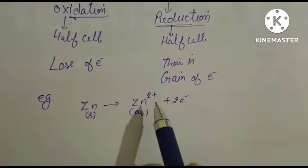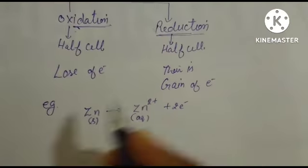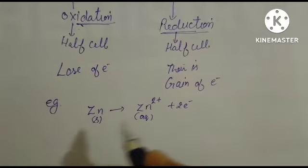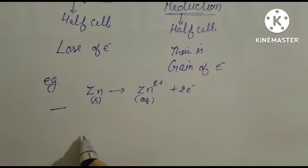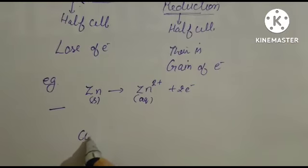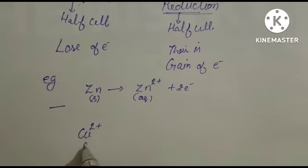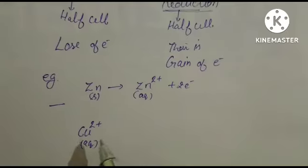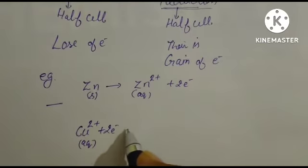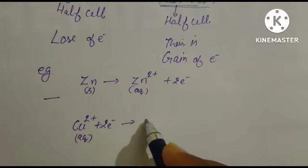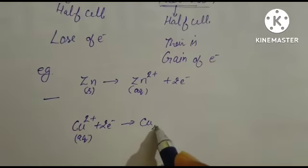Zinc loses its electrons, then it is oxidation half cell. On another side, copper in aqueous form gains these two electrons and forms copper solid.